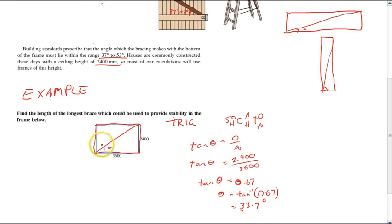So that means that this angle here is 33.7 degrees. Now unfortunately, that's outside of building regulations. You can see our angle needs to be between 37 and 53. This angle is 33.7.